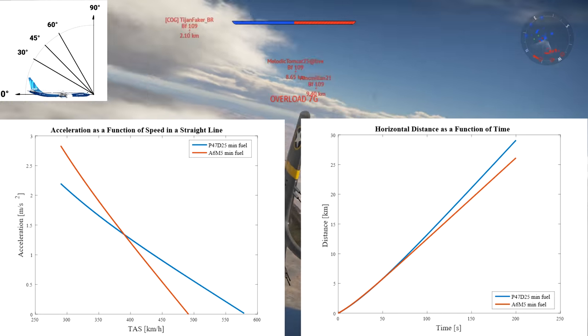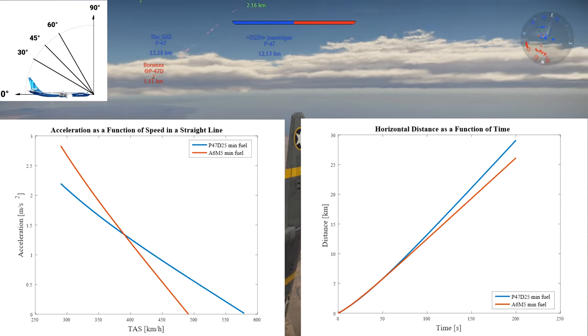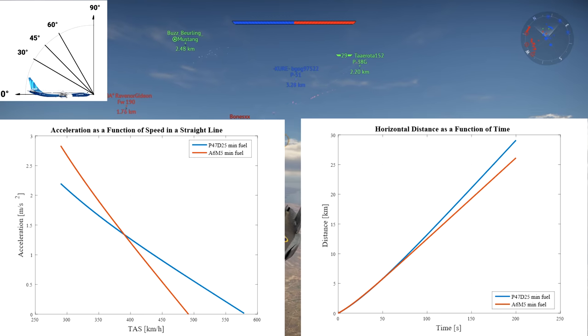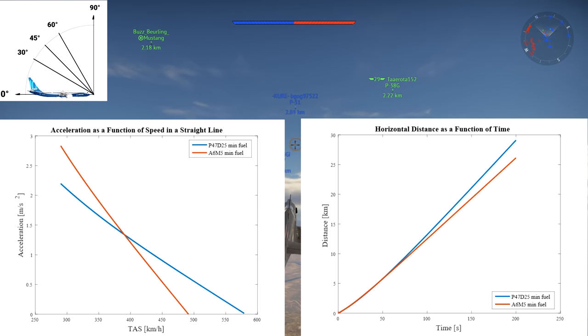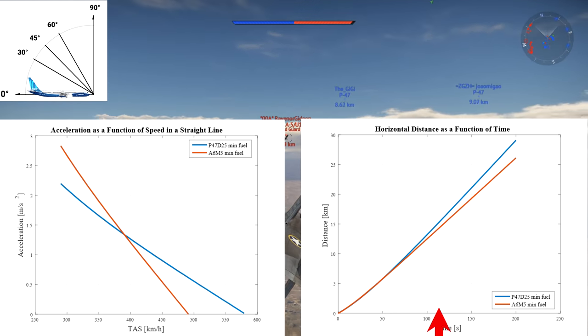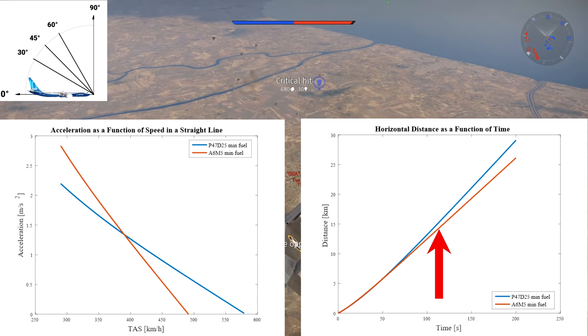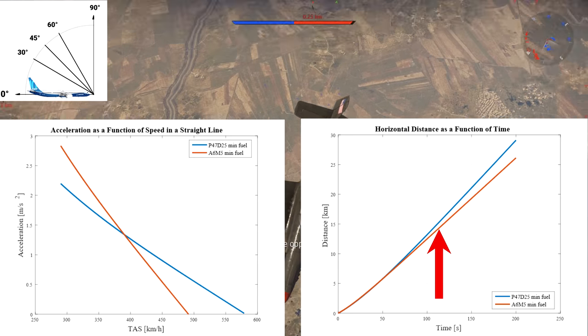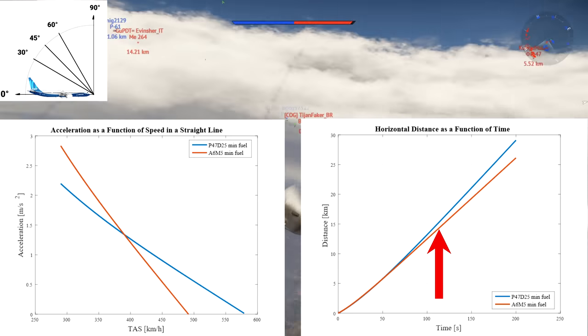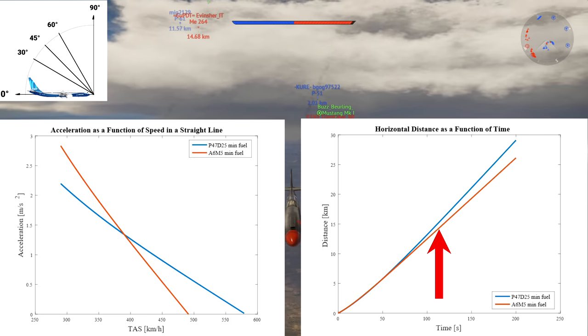The simulation ran for 200 seconds, and the A6M-5 reached its top speed of 490 kph, and the P-47 almost reached its top speed of 565 kph at sea level. On the graph on the right, you can see the distance both aircraft covered in that 200 second simulation. It takes the P-47 2 minutes to get 1 km separation from the Zero, again highlighting the lengthy process of getting separation from an aircraft when starting at equal energy states.